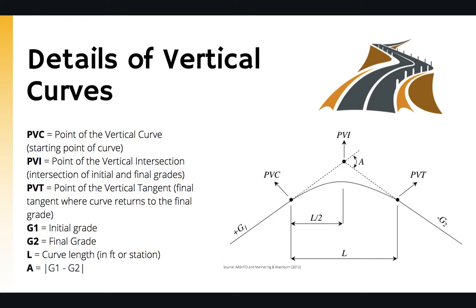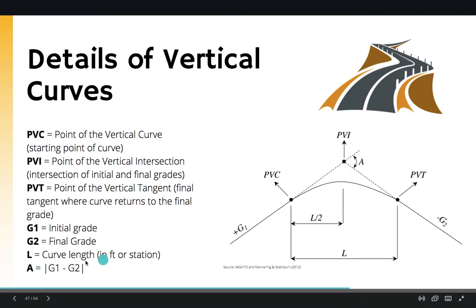It is important not to confuse this with the actual arc lengths, which we will see in horizontal curve design. The distance between the starting point and the point of intersection will be half the length of the vertical curve. The difference between the two slopes g1 and g2 is shown as A, which is the absolute difference between g1 and g2.